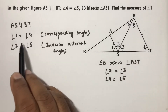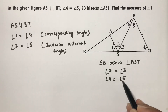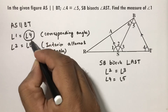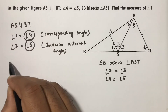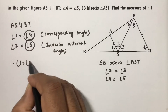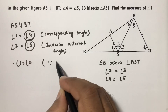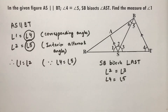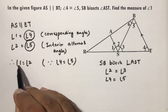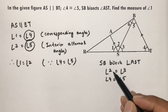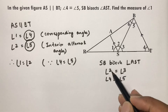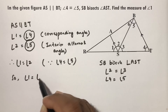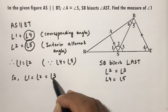Observing from these equations: angle 4 equals angle 5, and angle 1 equals angle 4, and angle 2 equals angle 5 — therefore angle 1 equals angle 2. Since angle 2 equals angle 3, we can write angle 1 equals angle 2 equals angle 3.